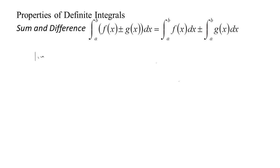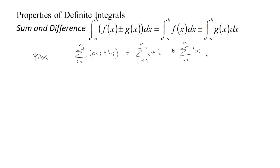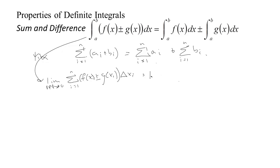Why is that true? It's a property of sums: if you have a sum where each term consists of the sum of two numbers, you can add up all the first numbers and then add up all the second numbers and get the same result. So when talking about a definite integral, you're taking the limit as the norm of the partition tends to zero of the sum of [f(x_i) ± g(x_i)] times delta x_i. We can apply this property and write it as the limit of the sum of f(x_i) delta x_i plus or minus the sum of g(x_i) delta x_i.